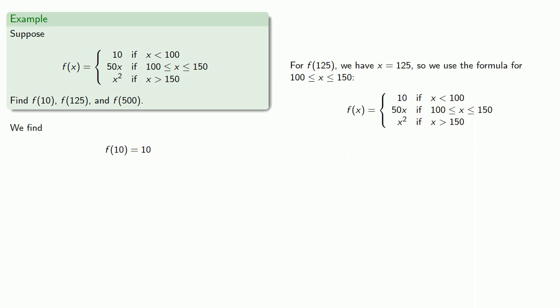For f(125), we have x equal to 125, and so we use the formula where x is between 100 and 150. And again, it's helpful to pretend that the other two lines of this function definition don't exist because we don't have x less than 100 and we don't have x greater than 150. So we'll cover them up. And our function definition says that f(125) is 50 times 125, which gives us our function value.